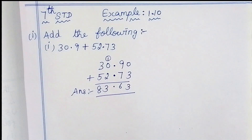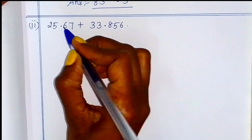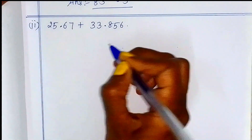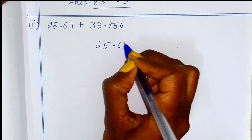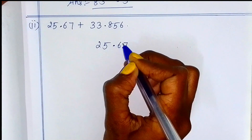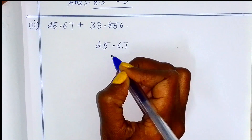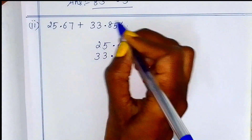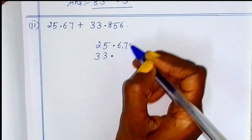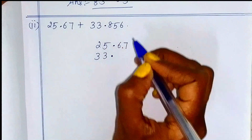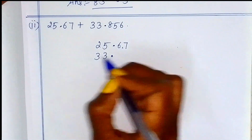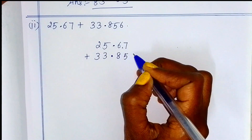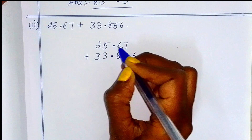Now we can add 25.67 plus 33.856. So we can add 2 decimal numbers. First number 25.67. Now we can add the number. If we add the first decimal point, we can make the whole number 2 digits, so that is straight. Now we can add to make the decimal part. The second number has three decimal parts, so first numbers addition, straight. Decimal point 8, now we can add 6.